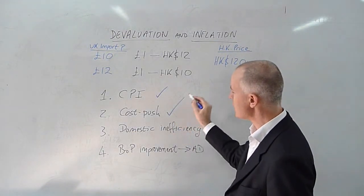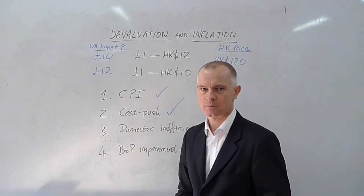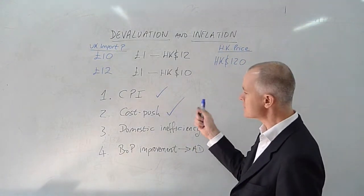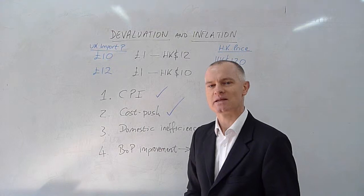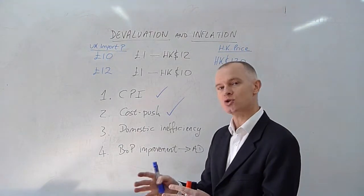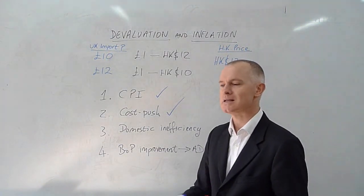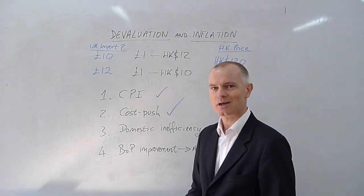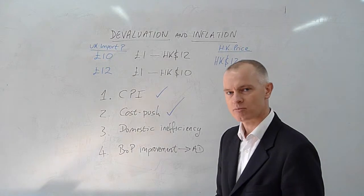The UK imports many raw materials: wood, plastics, oil. These things, when imported, must be more expensive. So even in the production of a product which is made entirely within the borders of the UK, if it uses imported components, it will face cost-push pressure.